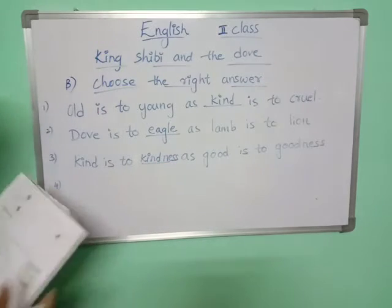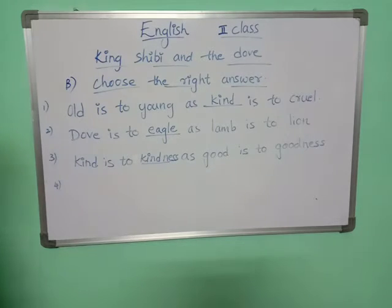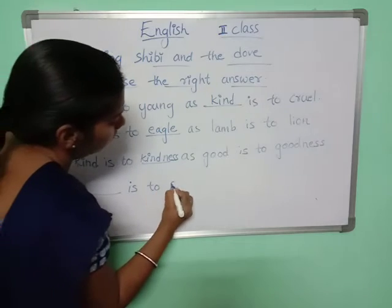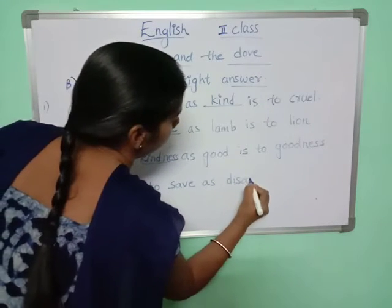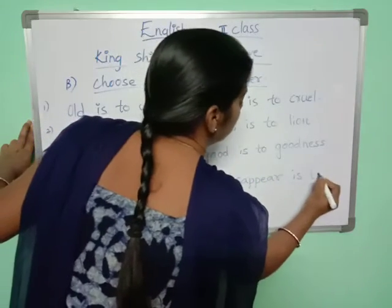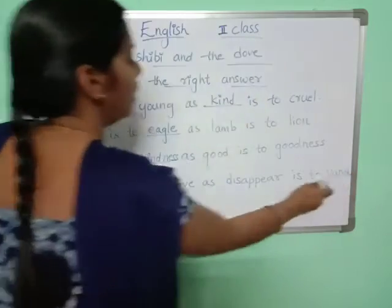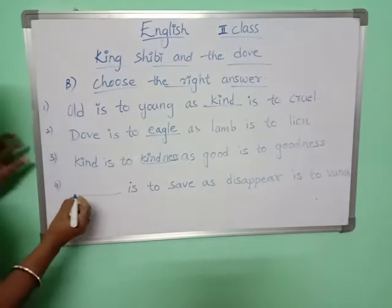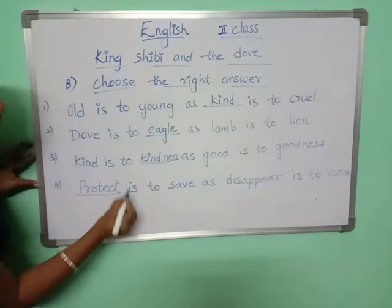Fourth: dash is to save as disappear is to vanish. Vanish corresponds to disappear, just like save corresponds to protect. So the answer is protect.